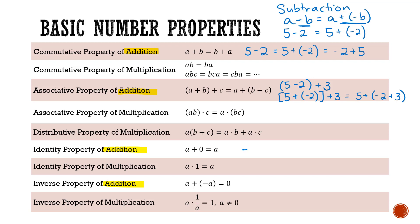Similarly, negative a plus 0 gives negative a, so the identity property applies to negative values. The inverse property also applies: the opposite of a negative value — the negative of a negative — is a positive. So negative 1 plus positive 1 gives 0. Thus all of the addition properties apply for subtraction and negative values as well.